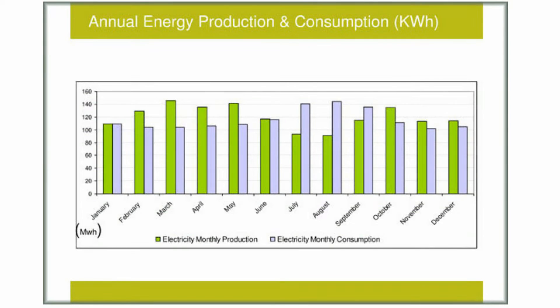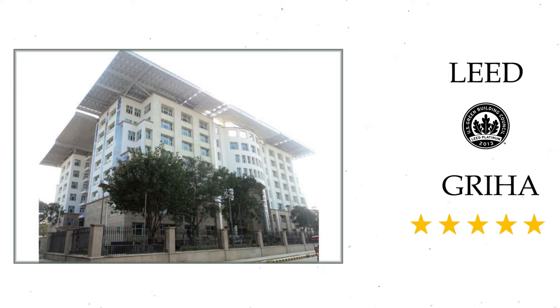This is an annual energy production and consumption graph of the building. We can see the electricity produced by the building is more or less equal to the electricity consumed by it. This building is certified by LEED and GRIHA with platinum and five-star rating.